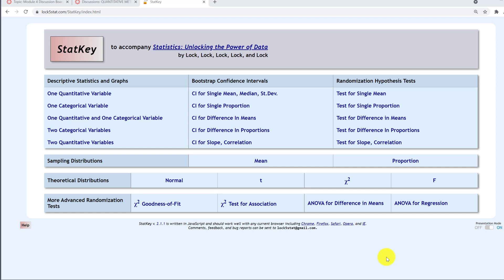I'm going to show you how to use StatKey to find the Z critical value for a two-tailed hypothesis test with a 0.05 alpha level. From StatKey's homepage, I need a theoretical normal distribution.